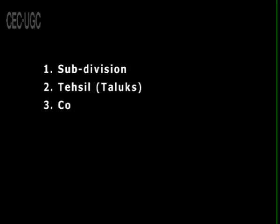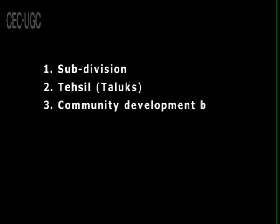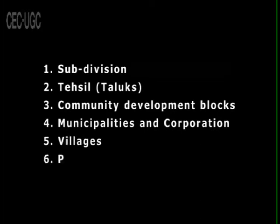The corporation is headed by mayors elected by councillors, who are elected from different wards of the city. The executive agency includes the commissioners, the secretaries, the engineers, and the health officer. The activities are similar to those of municipalities but on a much wider scale. Within each district, there are six types of administrative areas: number one, subdivision; number two, taluks; number three, community development blocks; number four, municipalities and corporations; number five, villages; and number six, panchayats.